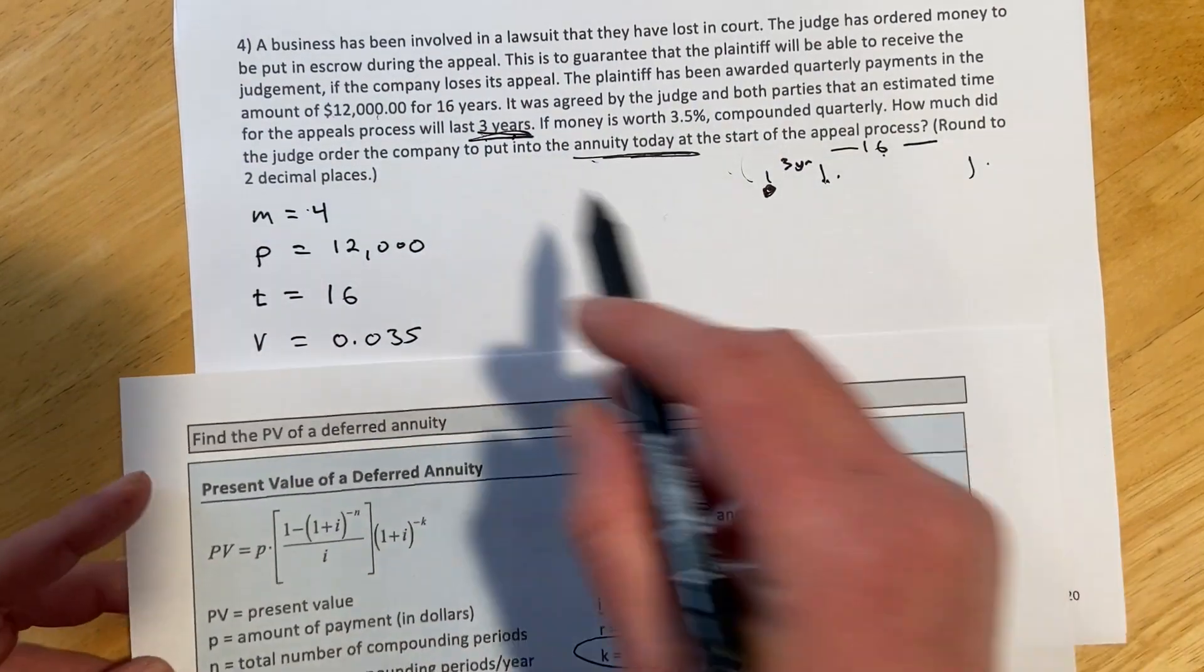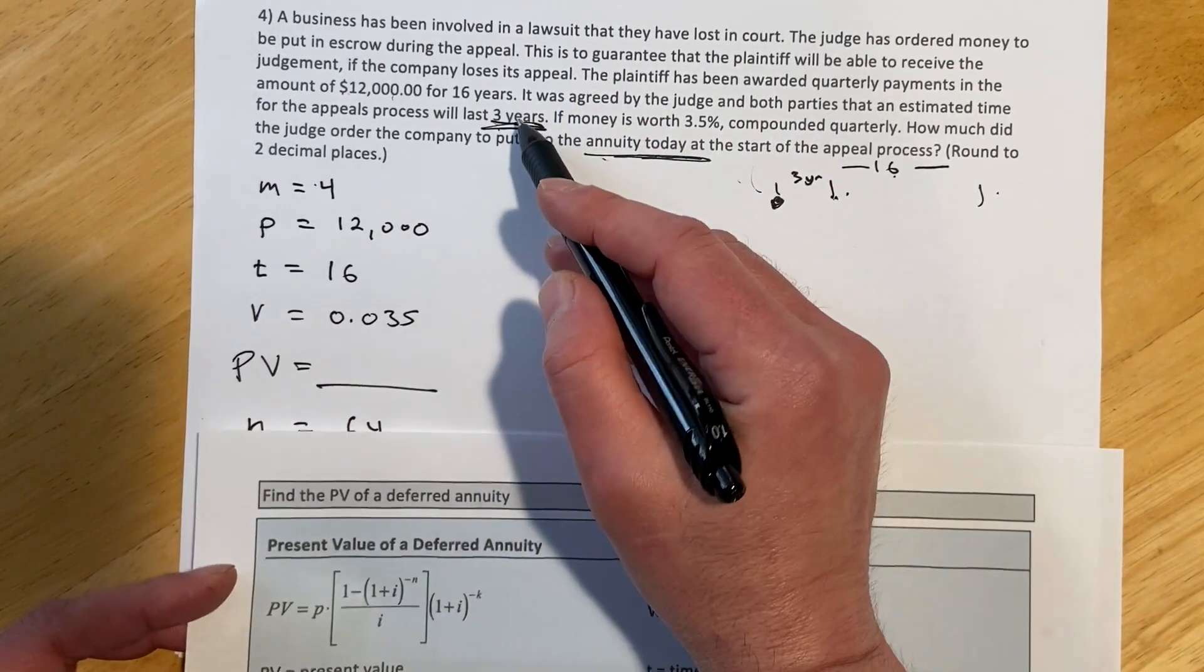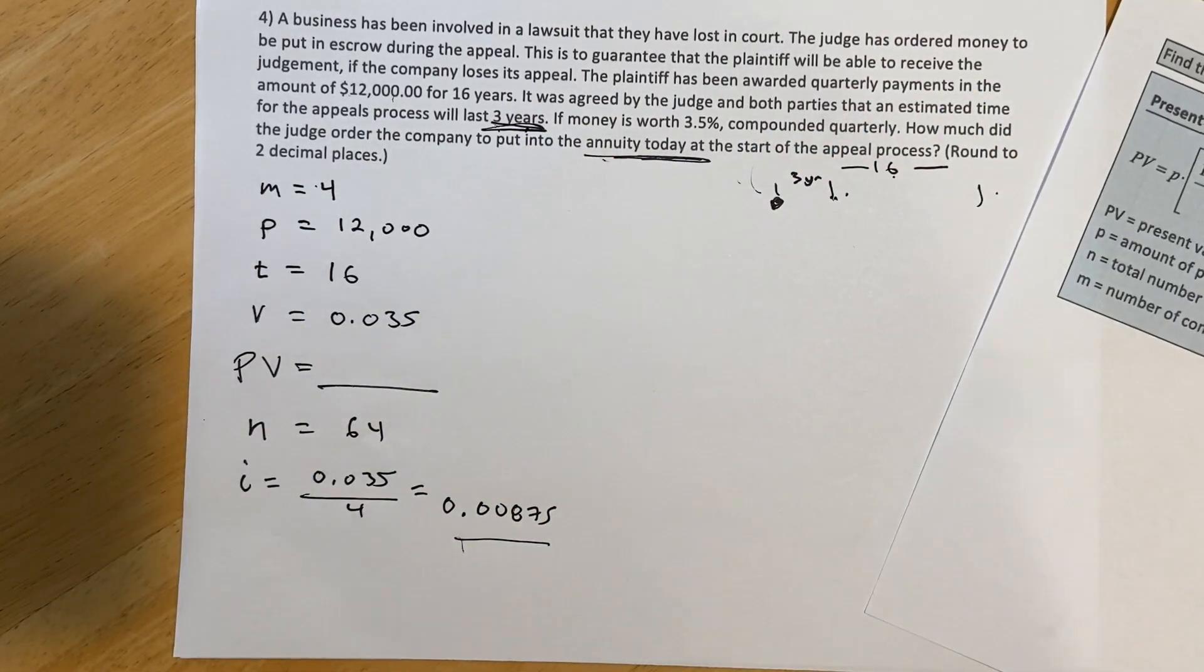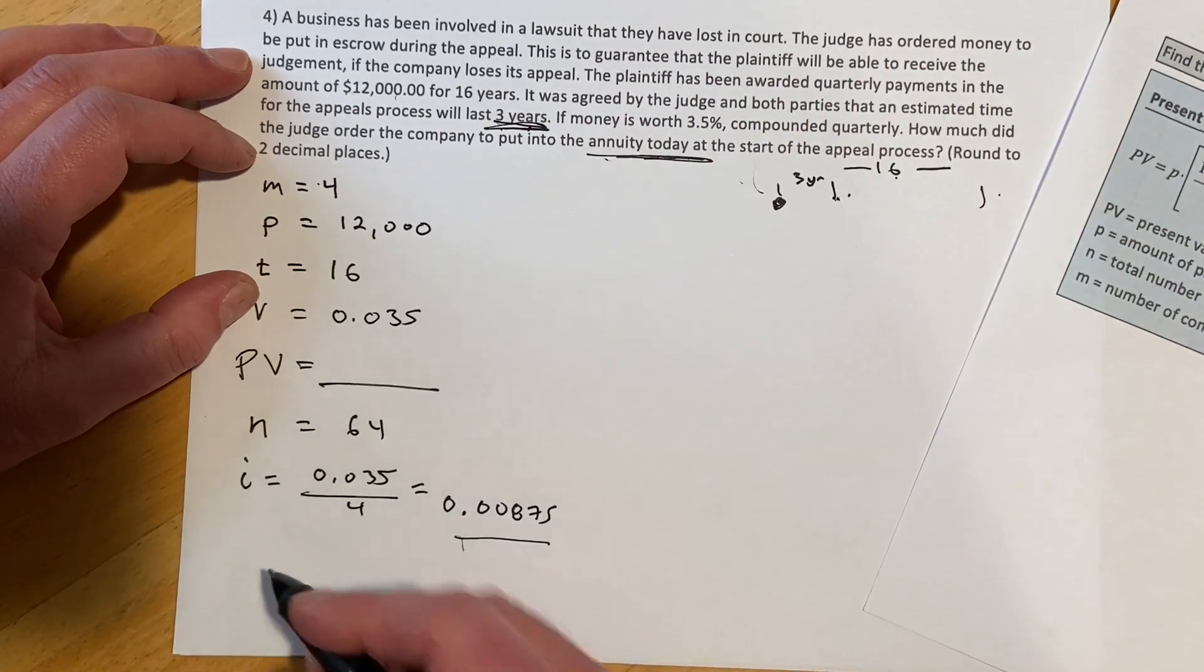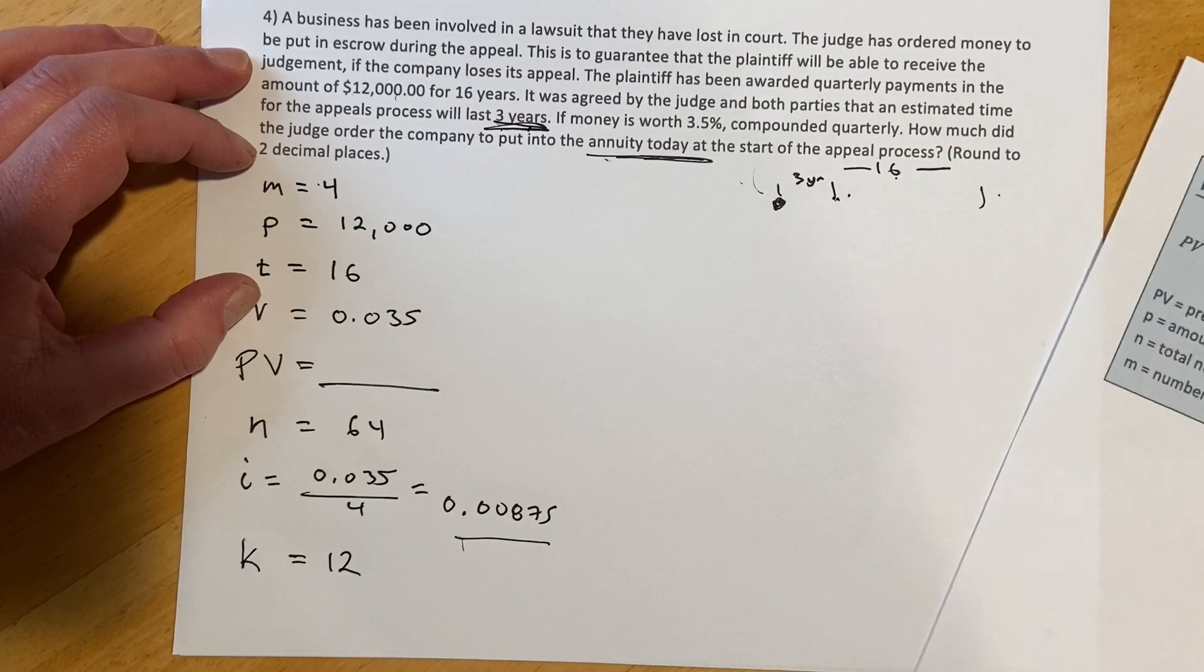So here's where we want to not mess it up. It's deferred for three years, but that's not the number of periods. So the number of periods is like the same as would be like the number of payments. So in three years quarterly, that would make 12 payments. So our K in that case is 12.